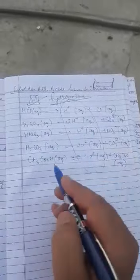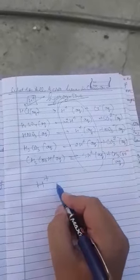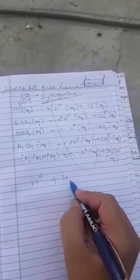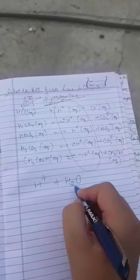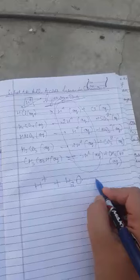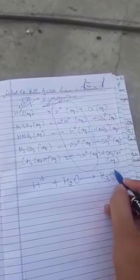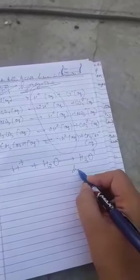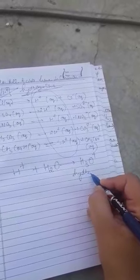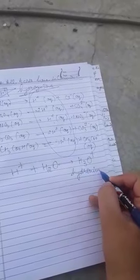Now, what will happen when H+ comes in contact with water? Because water is present in the aqueous medium, it will form H3O+. This is known as the hydronium ion.